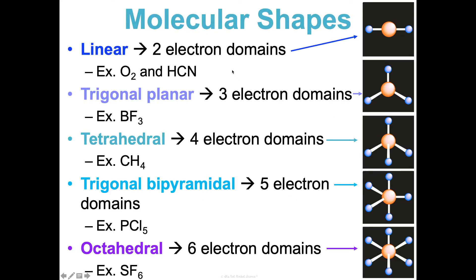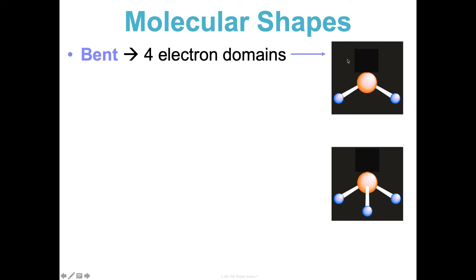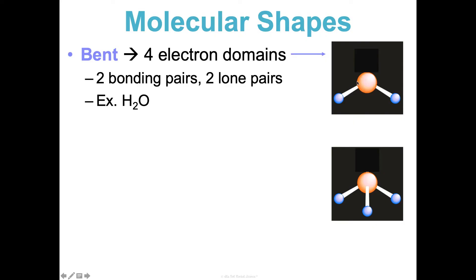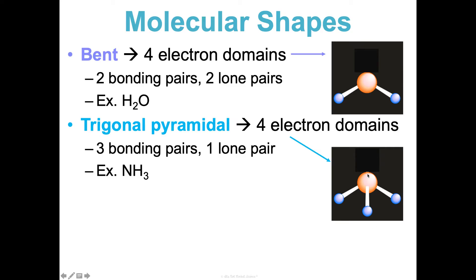Two more shapes to note get more specific. Bent has four electron domains, but specifically two bonding pairs and two lone pairs of electrons. This is what we see with water — oxygen in the middle with a hydrogen on each side and two lone pairs. Trigonal pyramidal also has four electron domains, but with three bonding pairs and only one lone pair. This is what we see with NH3, nitrogen trihydride. Also note that larger molecules often show evidence of multiple molecular shapes, as we see with macromolecules in biology. For our purposes, we'll only be looking at simple molecules.